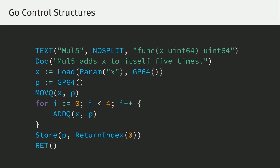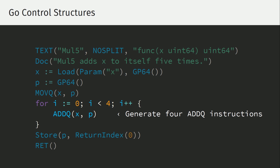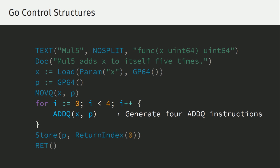To drive this point home: we can adjust this to add X to itself five times. It's very simple — we just put it in a loop and generate four ADDQ instructions. And indeed, there are four of them in the output.